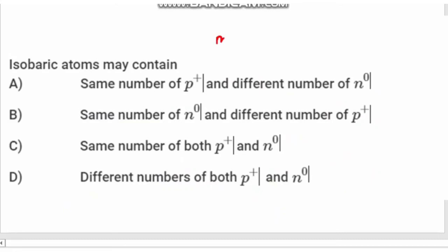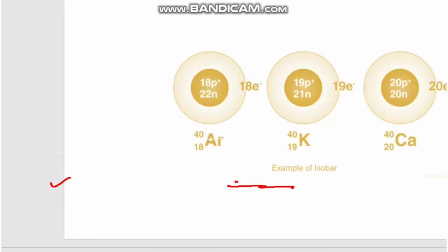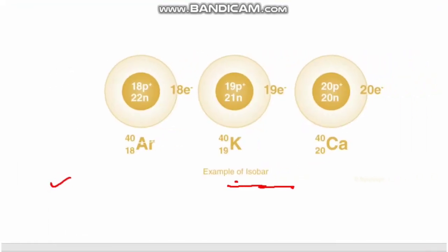Isobars: atoms with the same mass number but different atomic numbers. Isobaric atoms contain different numbers of both protons and neutrons. For example, argon, potassium, and calcium — argon has 18 protons, potassium has 19 protons and 21 neutrons, and calcium has 20 protons. So except for calcium, in all isobaric atoms, the atomic number differs along with different numbers of neutrons.